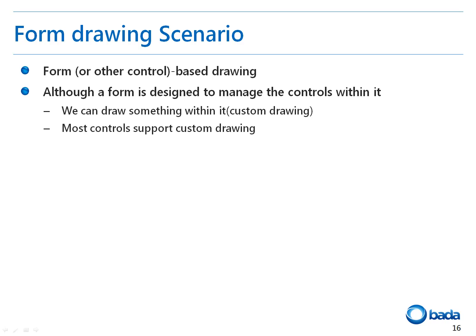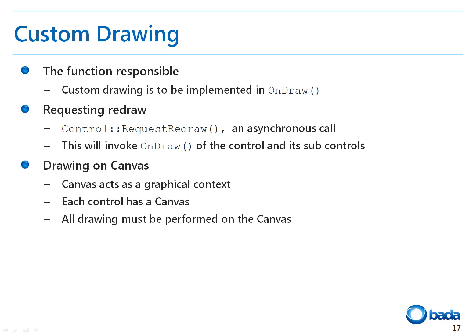Drawing can be done using a form-based application. A form-based application constructs a screen by using a form and other controls. Since form and controls have drawing functions to draw their own objects, you don't usually need to draw objects. However, most forms and controls provide custom drawing options. Let's see how you can make a custom drawing in a control. Every control has the onDraw function within which you can perform custom drawings. The onDraw function is the most important function to create a custom drawing in a control.